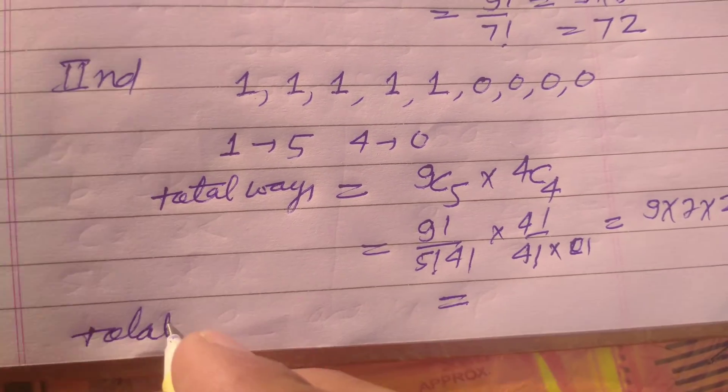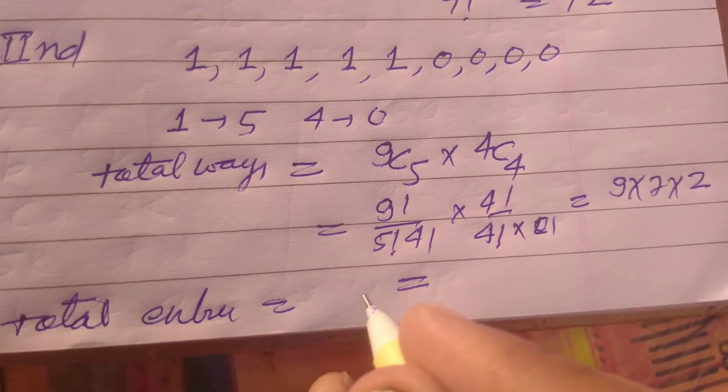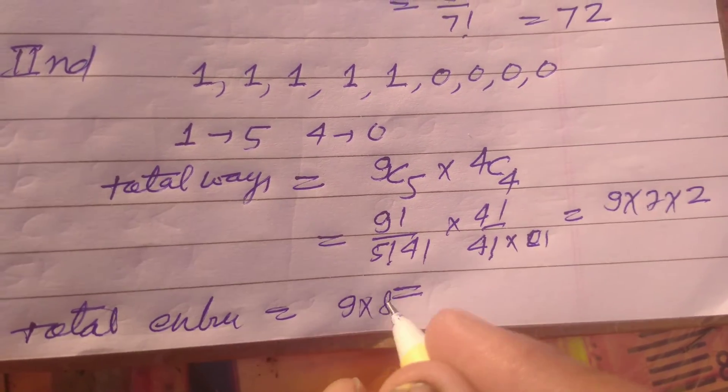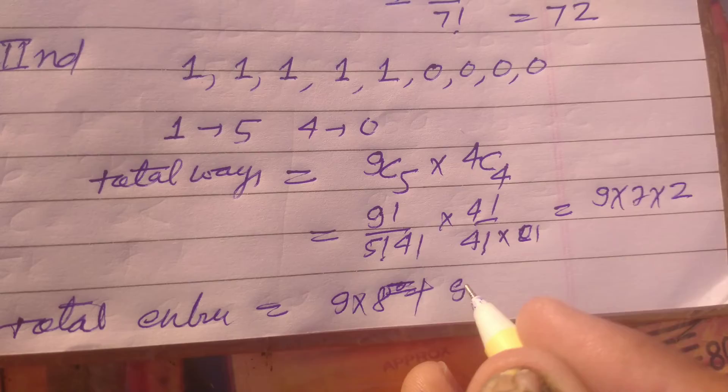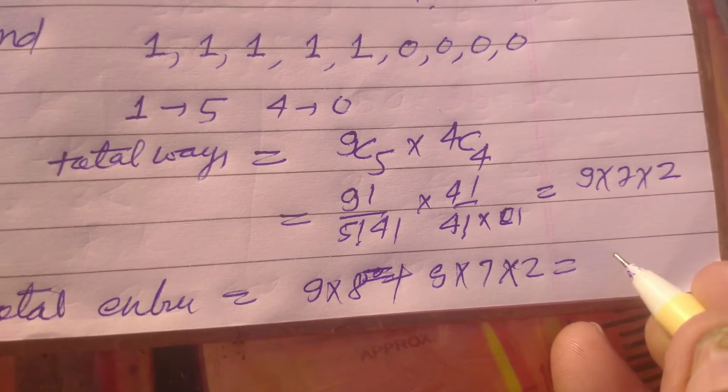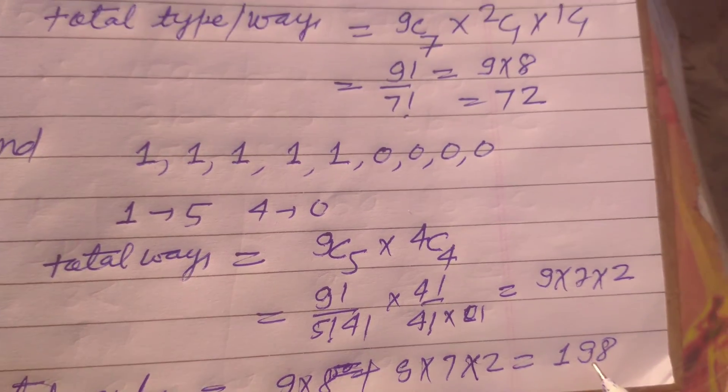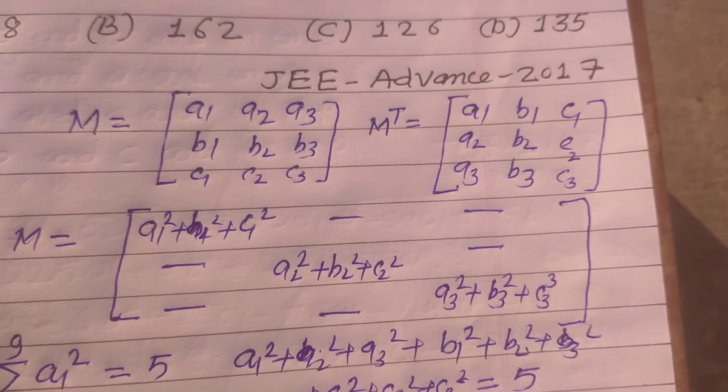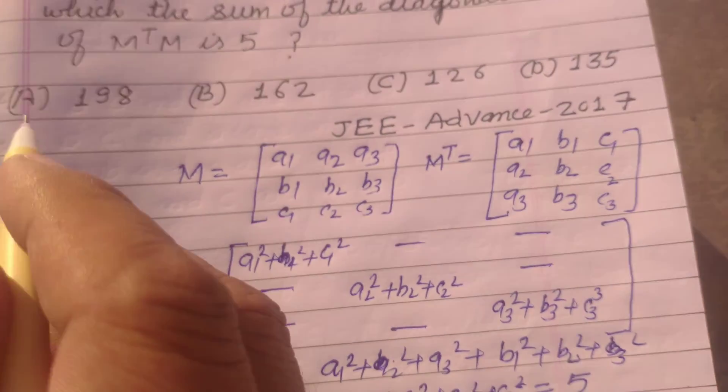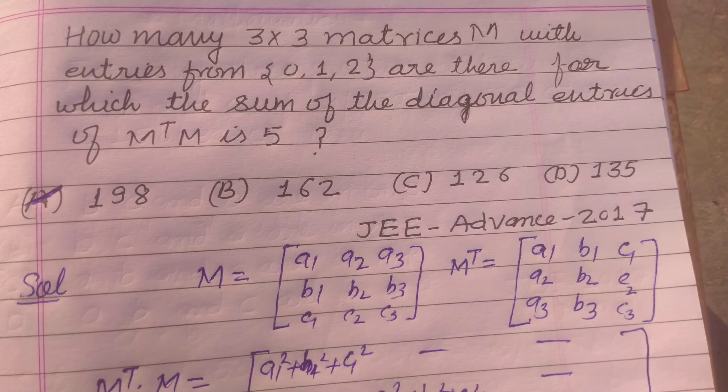Now total entries are 9 into 8 plus 9 into 7 into 2, and this will be 198. When we solve this we got 198. So 198 is the answer of this question which is found in option A.